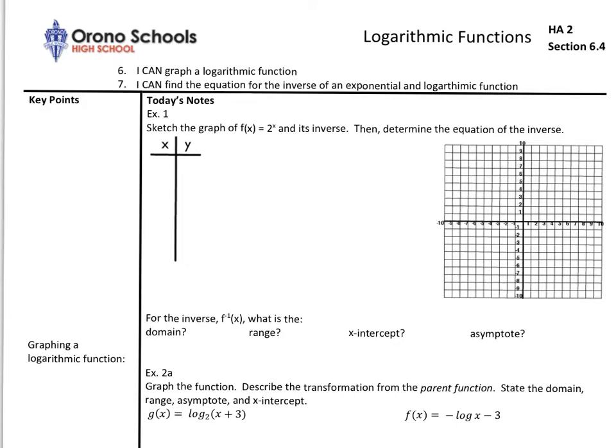We're going to start by reviewing a little bit of 6.1. Sketch the graph of f(x) equals 2 to the x, and then we'll sketch its inverse. To graph f(x) equals 2 to the x, we're just going to make a table. I'll start with 0, and if I plug in 2 to the 0 power, we get an output of 1.